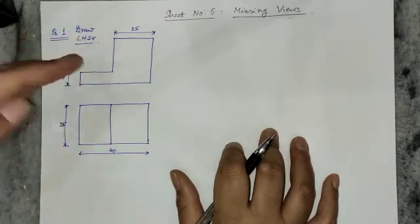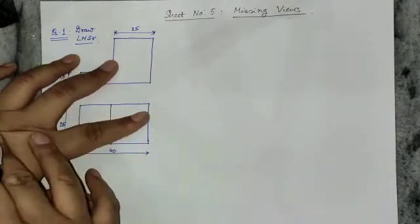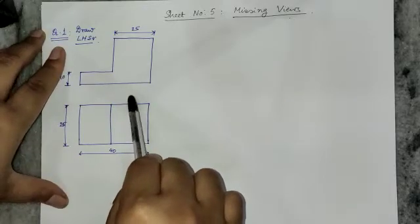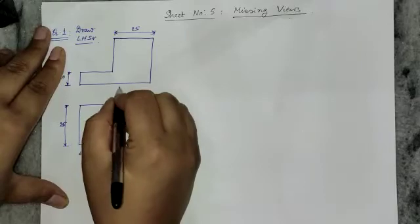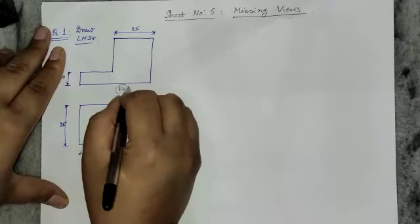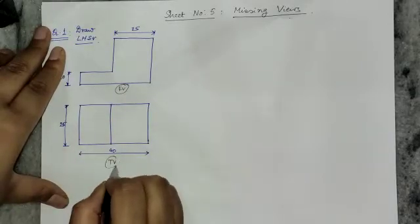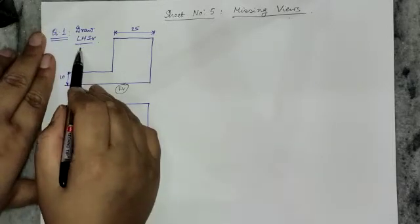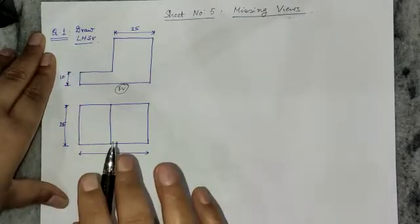In this type of problem — missing views — you will be given two views, and from these two views you have to relate them and draw the missing view. So for this question, you have been given a front view and a top view, and you are required to find out the LHSV, or the left hand side view.